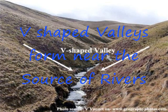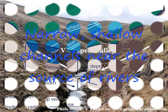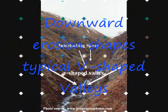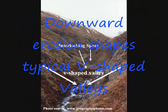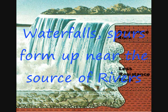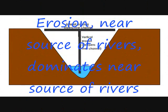V-shaped valleys form near the source of rivers. Narrow shallow channels near the source of rivers. Downward erosion shapes typical V-shaped valleys. Waterfalls also form near the source of rivers, where erosion dominates.